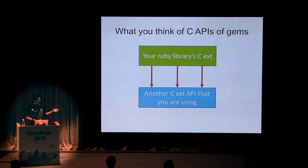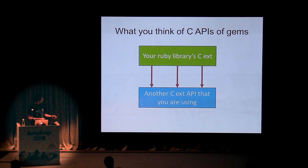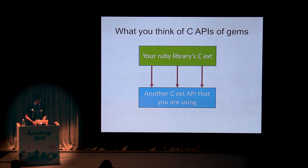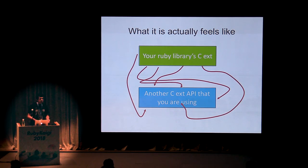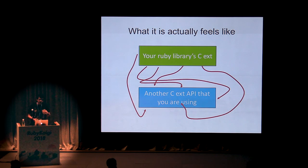Say you have a Ruby library and you want to access the C extension of another gem. You might think you can do this in a very straightforward manner, the way you are used to in object-oriented programming. But when you actually try to do this, it turns out you need to dive into the source code and actually see how these methods are implemented — doing a lot of things that you're not supposed to be doing when using a public API.